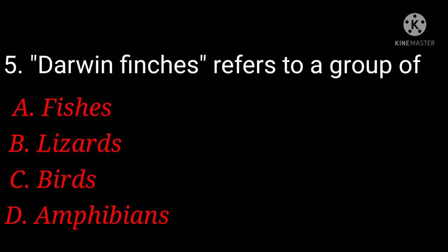Darwin finches refers to a group of: A. fishes, B. lizards, C. birds, D. amphibians. And the answer is option C, birds.